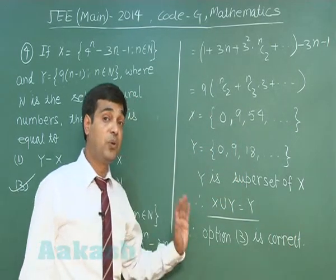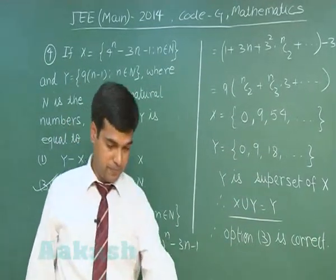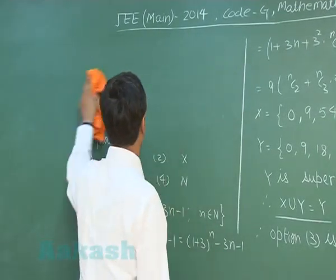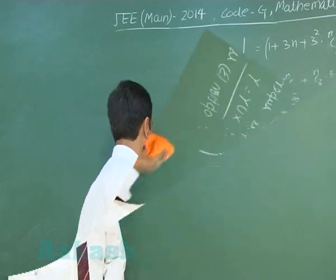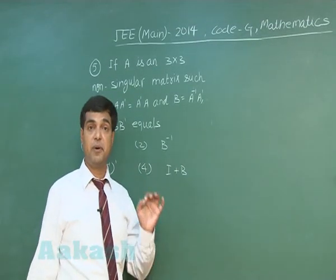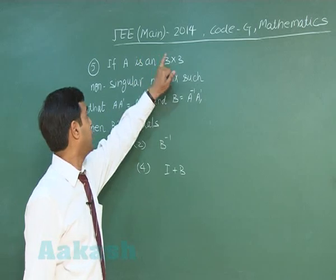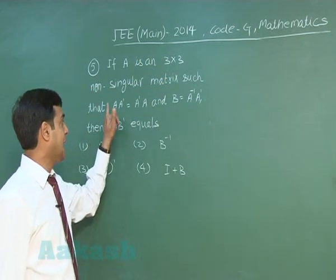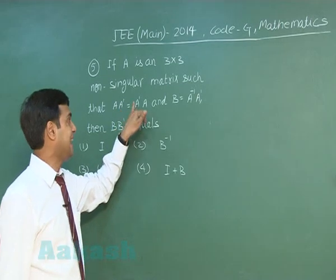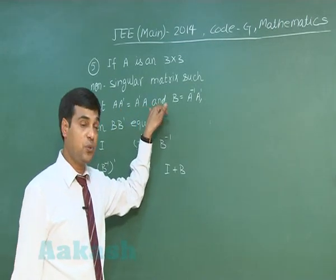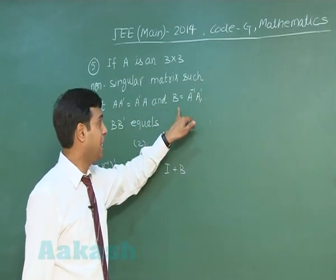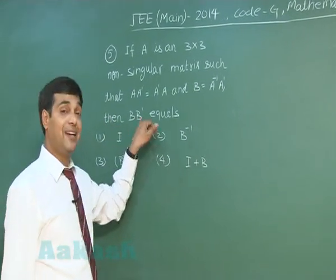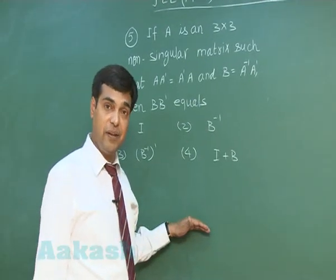Let's move to question number 5. If A is a 3×3 non-singular matrix such that A times A-transpose equals A-transpose times A, and B equals A-transpose times A-inverse times A-transpose, then BB-transpose equals — four options are given.